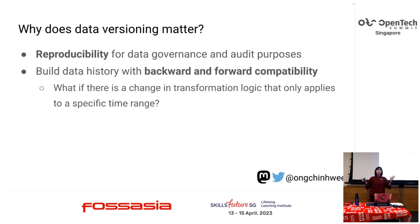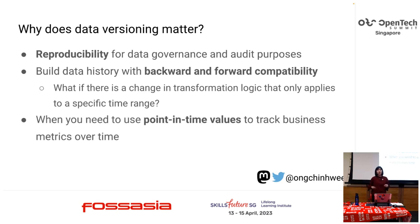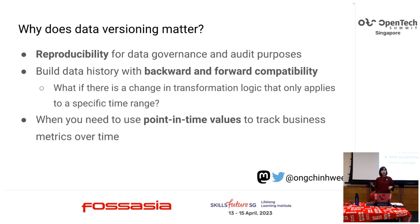Another reason is building data history with backward and forward compatibility. If transformation logic changes for a specific time range — for example, marketing has a promotion for a specific period requiring a change in rewards computation — you need to capture that logic change. Lastly, you need point-in-time values to track business metrics over time, so business users can profile how customer attributes change and monitor business metrics.